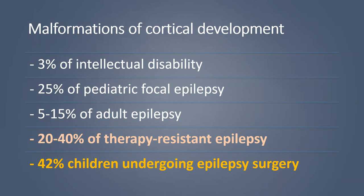They are a very important source of therapy-resistant epilepsy, constituting about 20 to 40% of these cases. In children who underwent epilepsy surgery, malformations of cortical development were the causative lesion in over 40%. So there's a very important association of cortical malformations with epilepsy, making them an important group to know when evaluating imaging studies of epileptic patients.